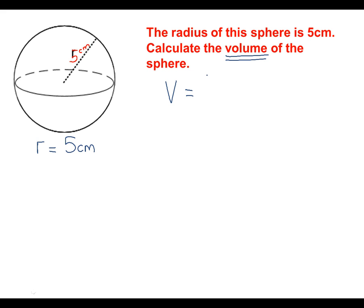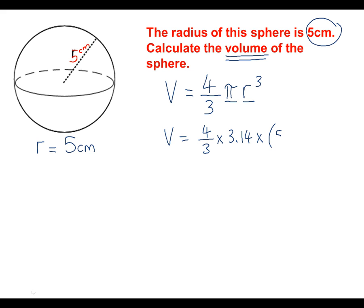The volume of a sphere is 4/3 π r cubed. We don't need to remember this formula — we can just look it up at the front of the exam paper. Now we know pi is 3.14, and we know r is 5 centimetres. So all we need to do is put these numbers into our formula: volume = 4/3 × 3.14 × 5 cubed. Type this into a calculator and we get 523.6 centimetres cubed, because volume is measured in centimetres cubed.